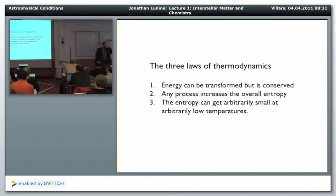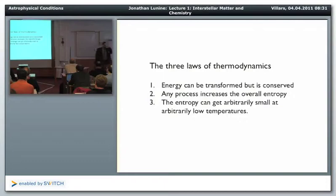Well, it was Sir Arthur Eddington who said that it was okay if your model violated Maxwell's laws. There might be something wrong with Maxwell's equations. And it's also okay if your ideas violated experimental evidence because experimenters sometimes get things wrong. But he said if your theory violates the second law of thermodynamics there's absolutely no hope for you. All hope is lost. So the three laws of thermodynamics are that energy can be transformed from one form to another but is overall conserved. Any process in the cosmos increases the overall entropy as long as you consider a large enough system. And then the entropy can get arbitrarily small if you go to arbitrarily low temperatures which is a good thing.